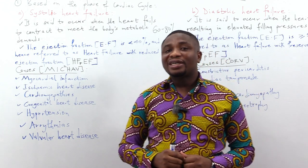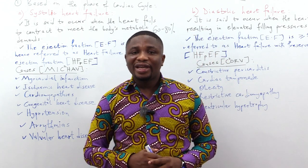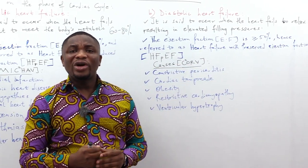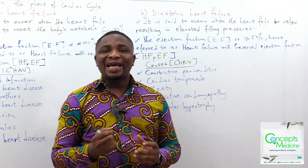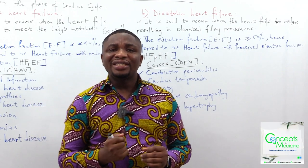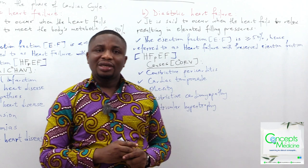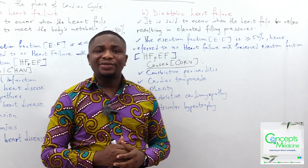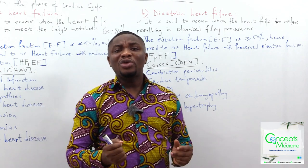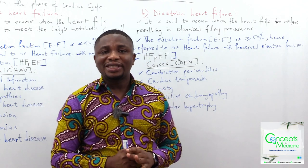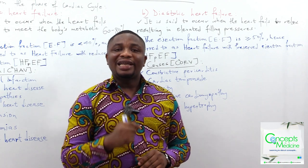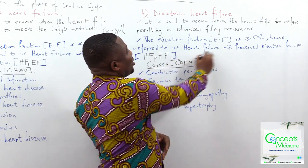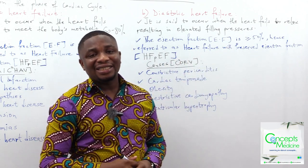Diastolic heart failure is said to occur when the heart fails to relax, resulting in elevated filling pressures. When this happens, the ejection fraction becomes greater than or equal to 50%. Hence, diastolic heart failure is referred to as heart failure with preserved ejection fraction.